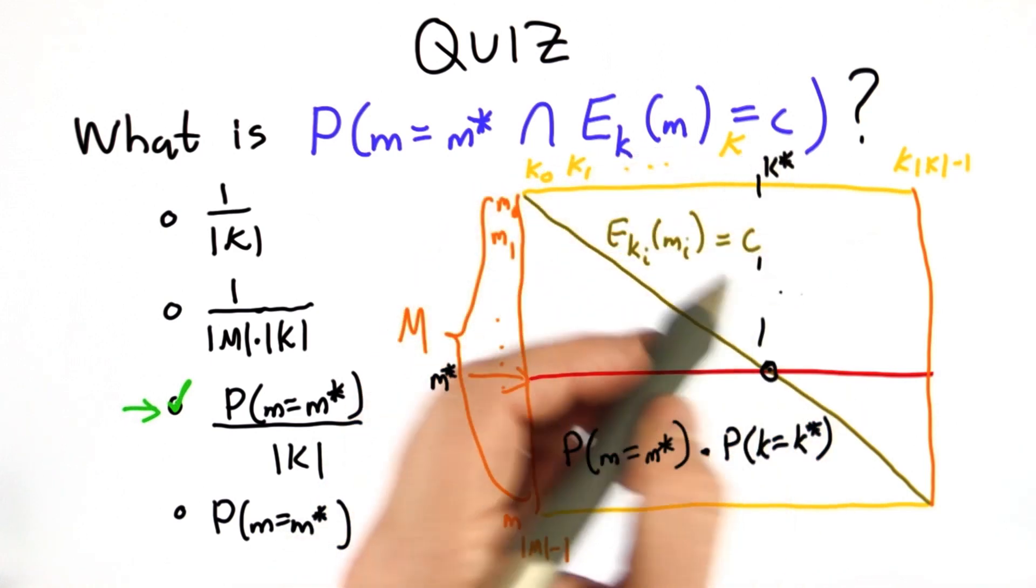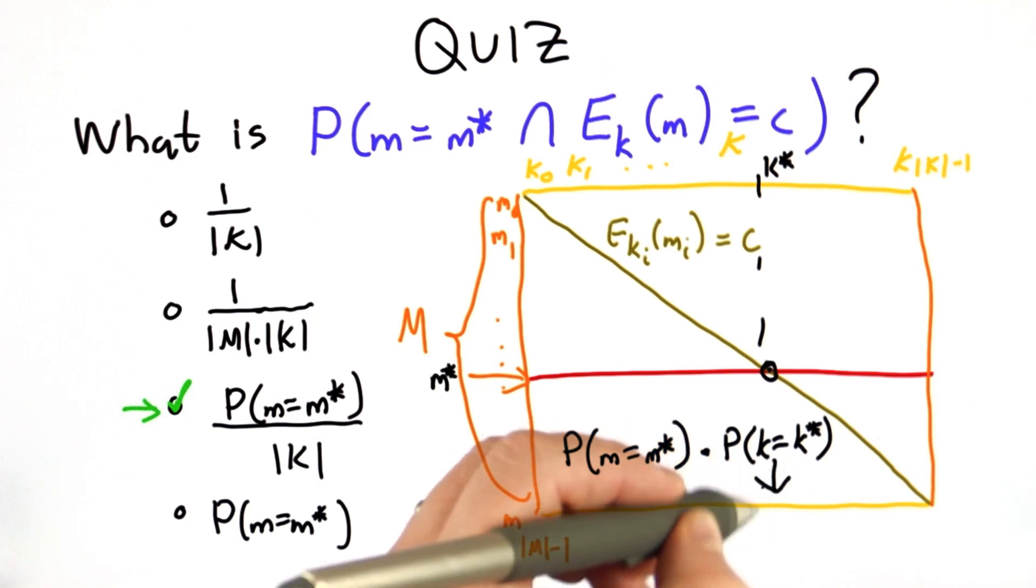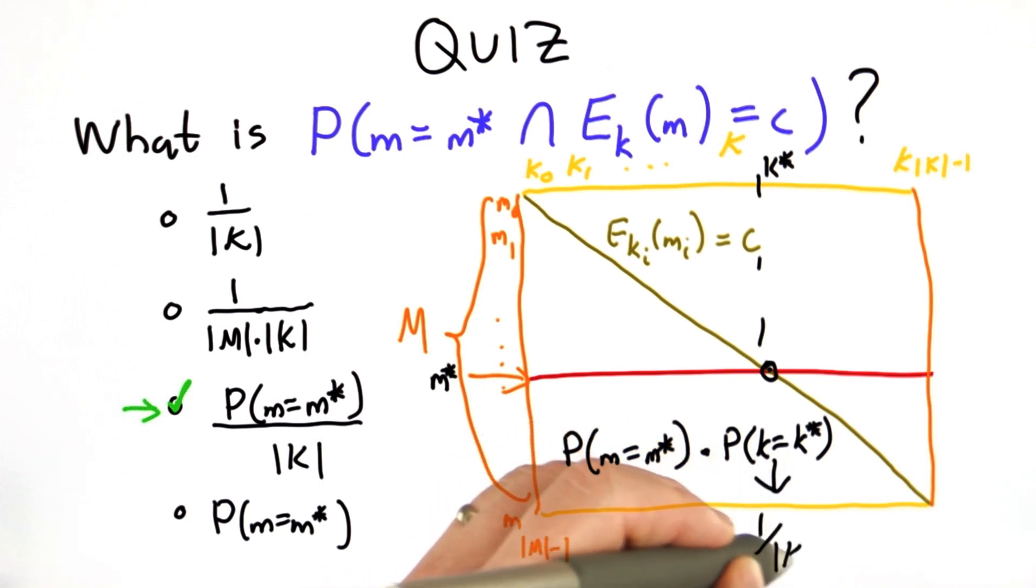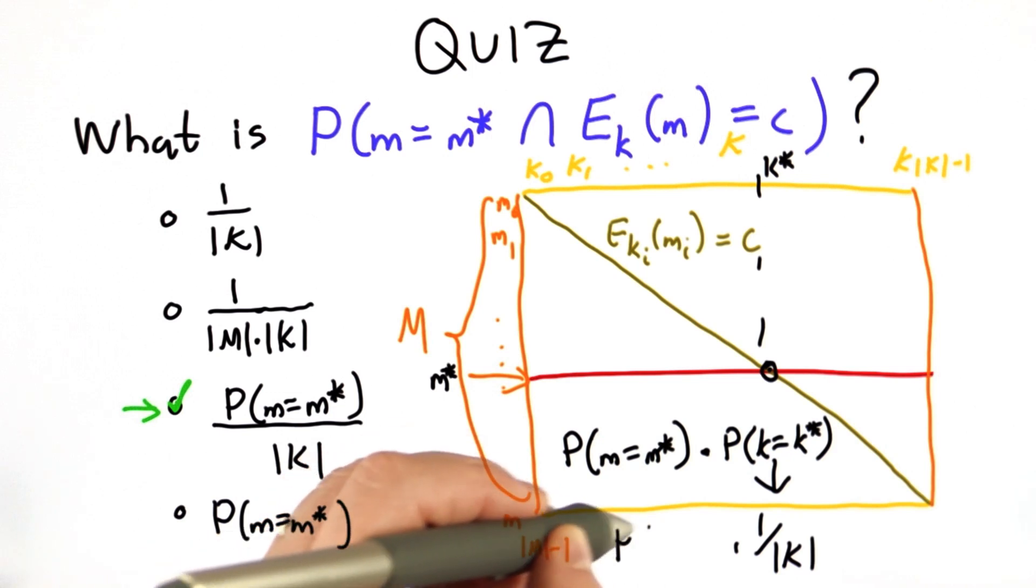But because the keys are uniformly distributed, we know that this probability is 1 over K, 1 over the size of K. We don't know that about the messages, so we leave that probability as it is.